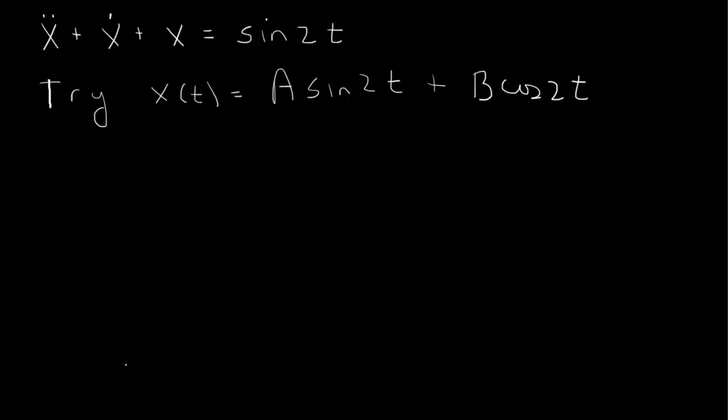So we substitute in. So the second derivative will bring out two factors of 2, change a sine to a minus sine. So we'll end up with negative 4a sine 2t minus 4b cosine 2t from the second derivative.